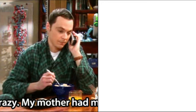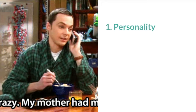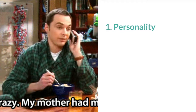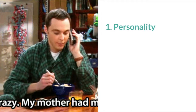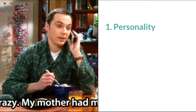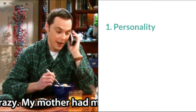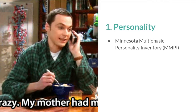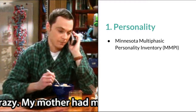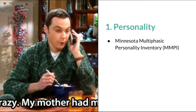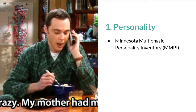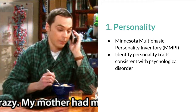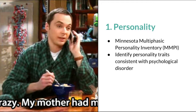The first type of psychological test is the personality test. Personality tests do not measure if you're 'crazy' or not, such as this scene from the Big Bang Theory. Rather, these tests measure personality characteristics and are useful in determining certain abnormal behavior. The best-known objective personality test is the Minnesota Multiphasic Personality Inventory, also known as the MMPI. This test is able to identify personality traits consistent with individuals who may be experiencing abnormal behavior or a psychological disorder.